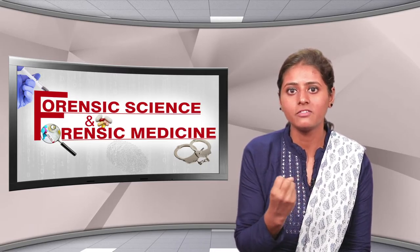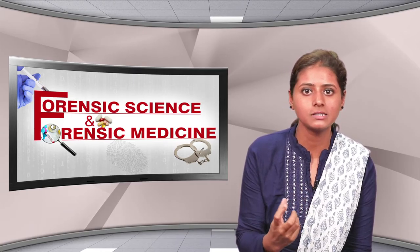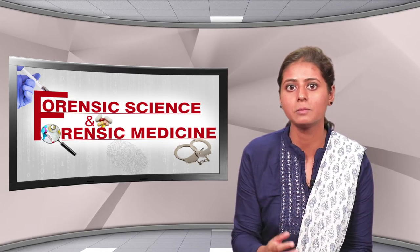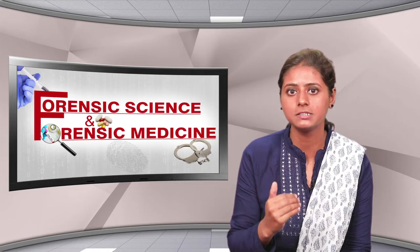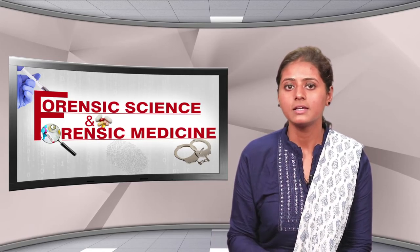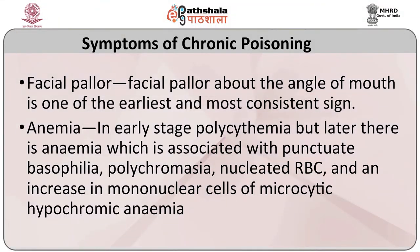Hindu married females apply vermilion (sindoor) on the parting of scalp hair. Vermilion contains red lead mixed with red synthetic dye that can be absorbed through the scalp. Signs and symptoms include facial pallor about the angle of the mouth as one of the earliest and most consistent signs, anemia in early stages, and later polycythemia associated with punctate basophilia, polychromatophilia, nucleated RBCs, and microcytic hypochromic anemia.